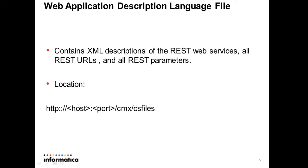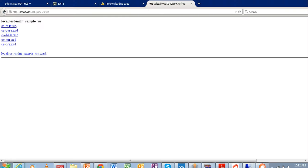The web application description language file contains XML descriptions of the REST web services — all the REST URLs and all REST parameters. The MDM hub generates a WADL file for each ORS. The location of the WADL file will be in the form: HTTP, host, colon, port, slash cmx, slash cs files.